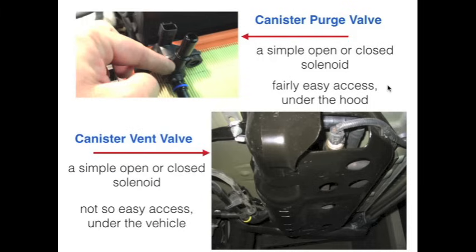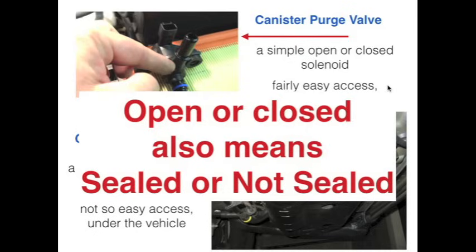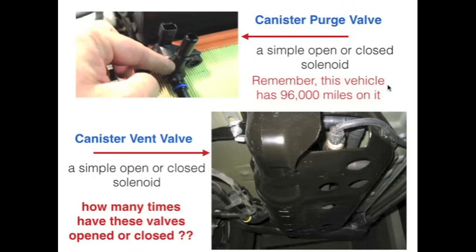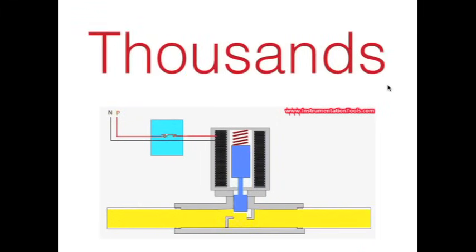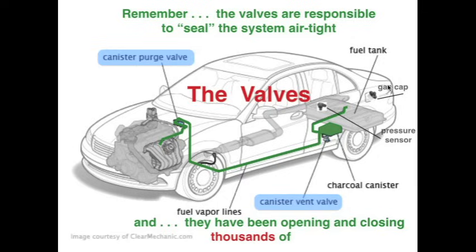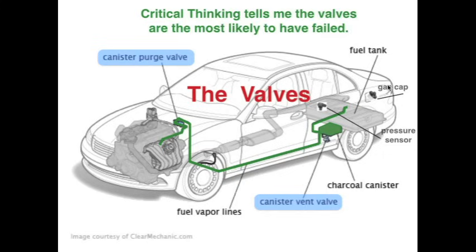There are only two moving parts in this system: the valves. The canister purge valve is a simple open-or-closed solenoid — fairly easy to access, usually under the hood. The canister vent valve is the same thing, but it's not so easy to access; it's usually under the vehicle and sometimes protected by shrouds. In the EVAP system, open or closed also means sealed or not sealed — leaking or not leaking. This vehicle has 96,000 miles on it, so those valves have opened and closed thousands of times. Critical thinking tells me the valves are most likely to have failed, so we should check them first.